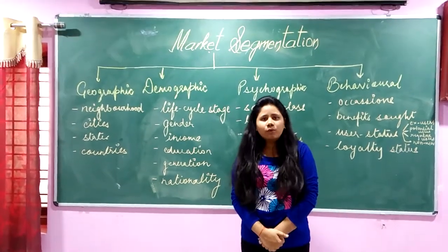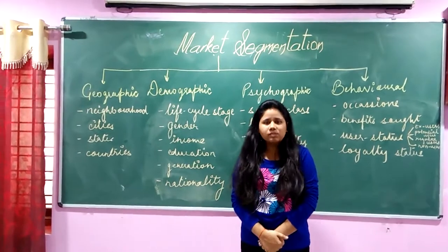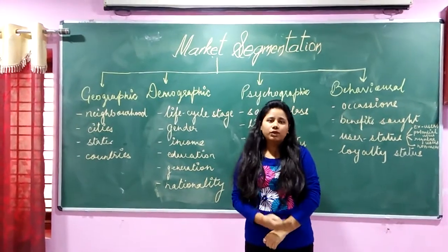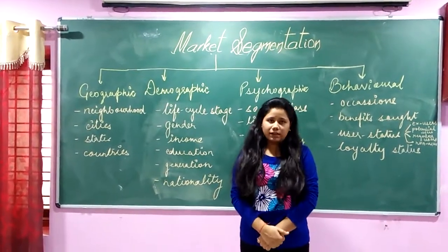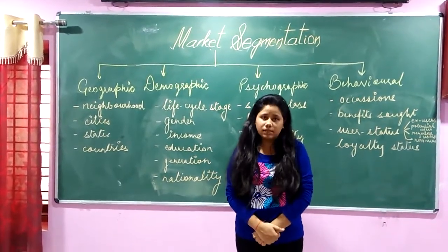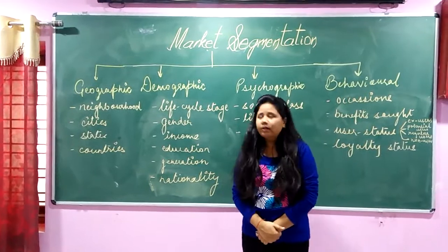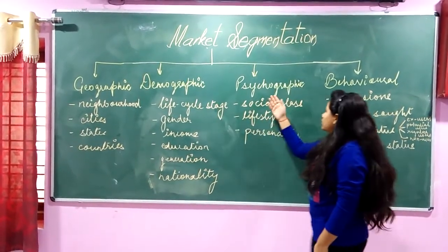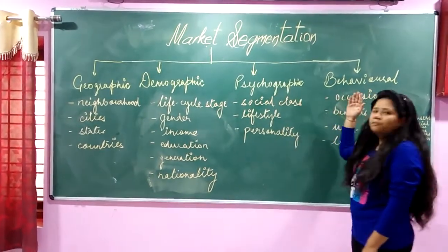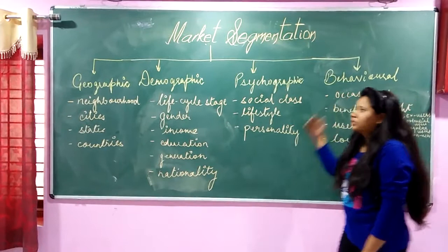There are four variables according to which a market can be divided or segmented. They are geographic, demographic, psychographic, and behavioral.